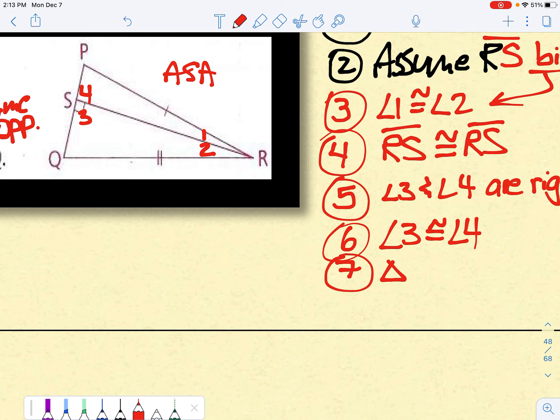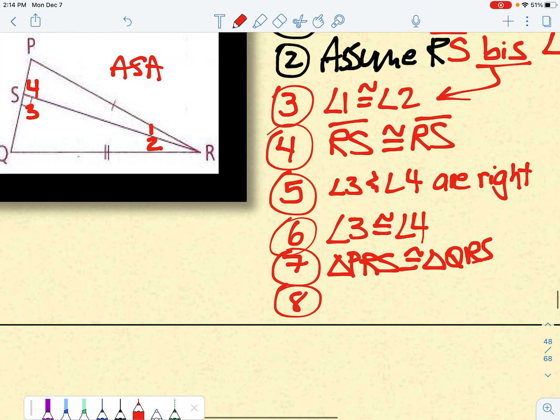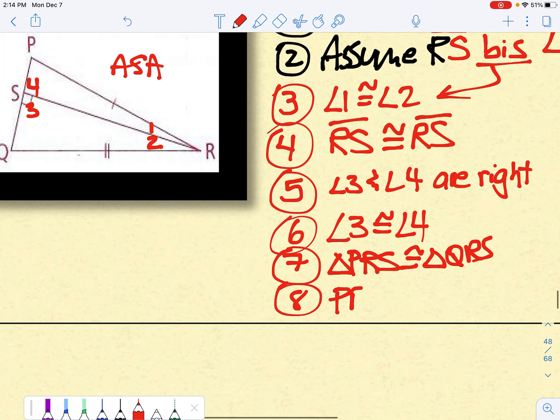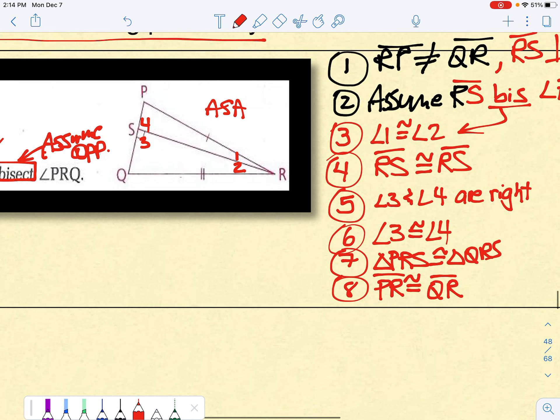And then line seven, triangle PRS is congruent to triangle QRS. Again, I believe that's the ASA. Finally, PR is congruent to QR because of that famous five-letter CPCTC. But this contradicts the given.